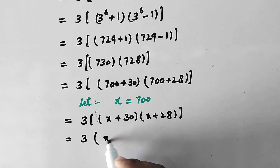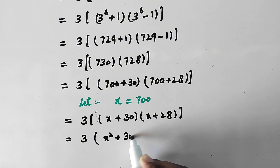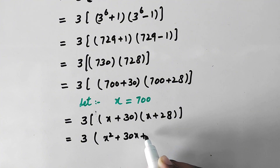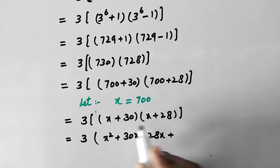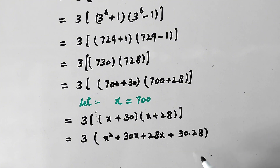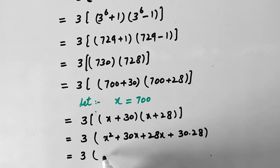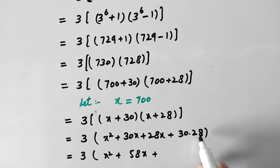Expanding the bracket, we multiply the terms to get x squared plus 30x plus 28x plus 30 times 28, which gives us x squared plus 58x plus 840. So the full expression is 3 into (x squared plus 58x plus 840).